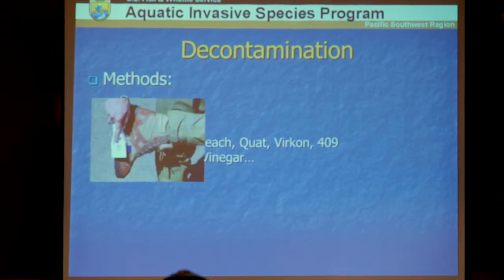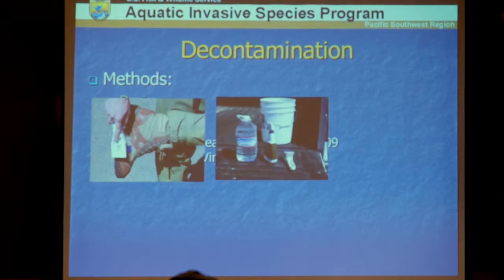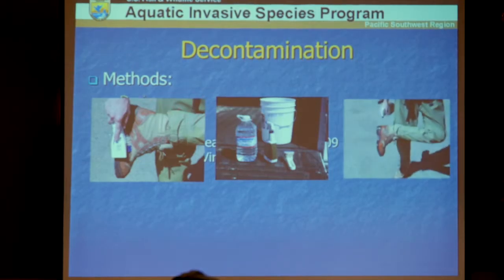Here's an example of using quaternary ammonia to clean waders when doing surveys or fishing between different watersheds. The basic field setup is a bucket, decontaminant, clean water, and a scrub brush. Apply chemical to the wader boot, ensure a good soak, let it sit for the required contact time, give it a good scrub, then rinse it off — making sure the rinse water goes to pavement, not into the stream.